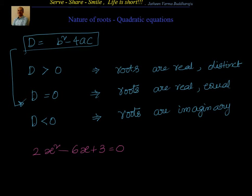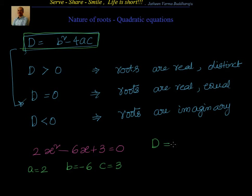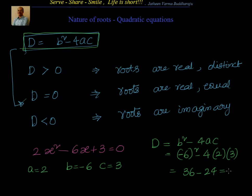Let's look at some examples. First: 2x² − 6x + 3 = 0. Here a = 2, b = −6, c = 3. To find the nature of roots, compute the discriminant: D = b² − 4ac = (−6)² − 4 × 2 × 3 = 36 − 24 = 12. Since D = 12 > 0, the roots are real and distinct.